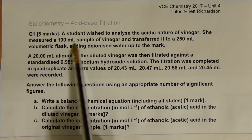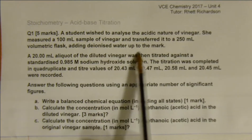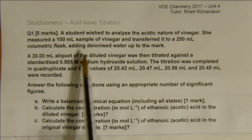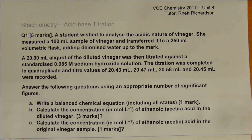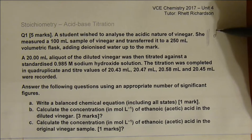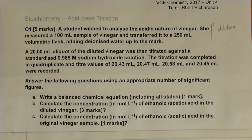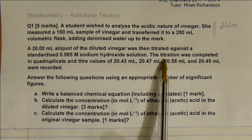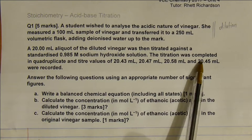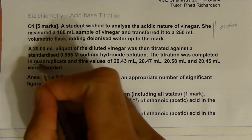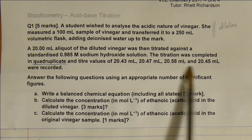The example we have is that a student wished to analyze the acidic nature of vinegar. She measured a 100 mL sample of vinegar and transferred it to a 250 mL volumetric flask, adding deionized water up to the mark. Next she took a 20 mL aliquot of the diluted vinegar and titrated this against a standardized 0.985 molar sodium hydroxide solution. The titration was completed in quadruplicate, so four times, and titer values of 20.43, 20.47, 20.58, and 20.45 were recorded.